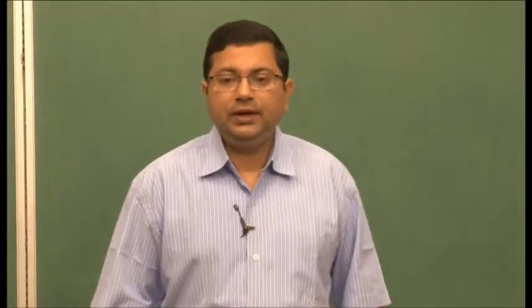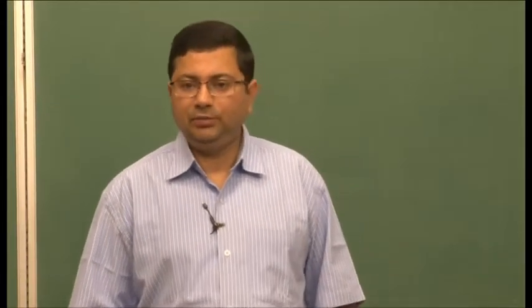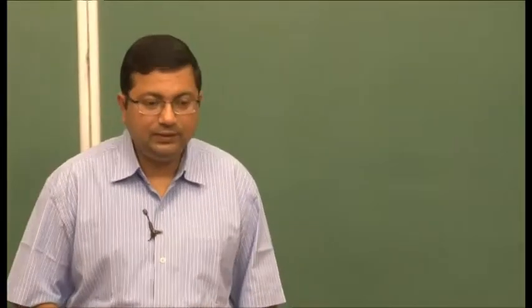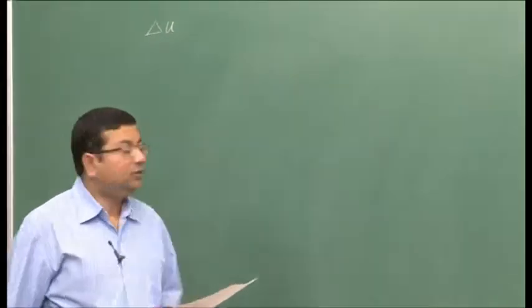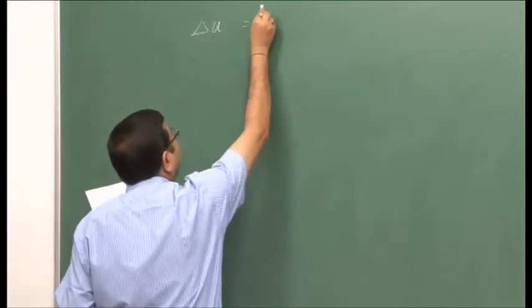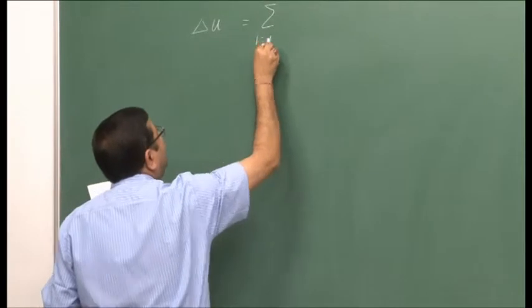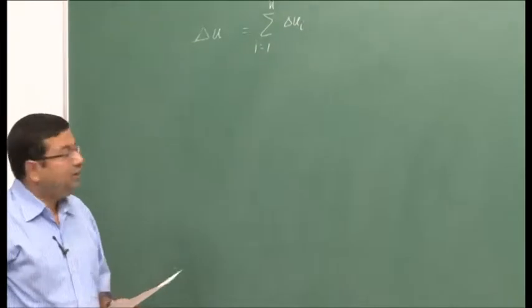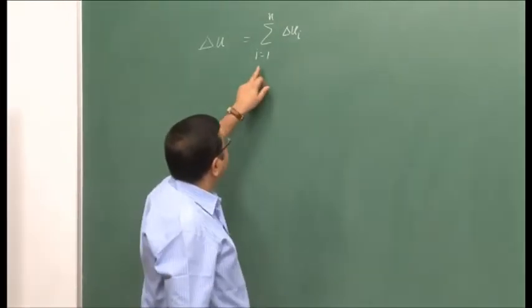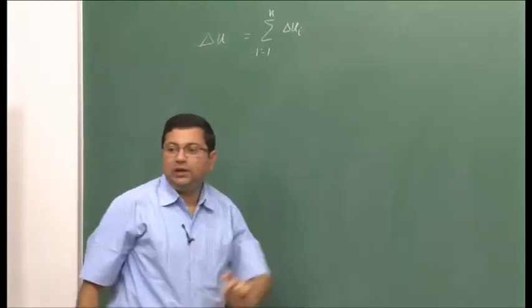Welcome back. In the last lecture, we discussed the operation of a multistage rocket, its performance, and derived an expression for the velocity increment for a multistage rocket. We showed that the overall velocity increment of a multistage rocket is the algebraic sum of the increments attained by individual stages, where subscript i represents the stage and n is the total number of stages.